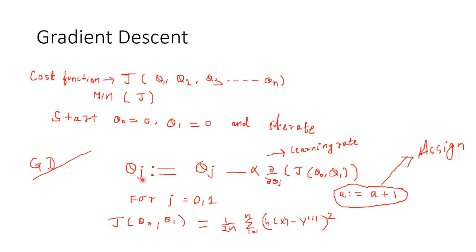Say for example j equals 1. Theta 1 is assigned as — note the difference between assigned and equal to: the colon-equals notation means assignment. For example, a is assigned as a plus 1. If the value of a was 5 previously, the current value will be a plus 1, that is 6. So here also, theta j on the right-hand side is the previous value, and theta j on the left-hand side is the updated or new value of theta j.